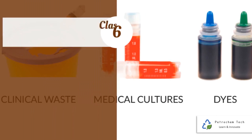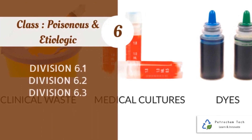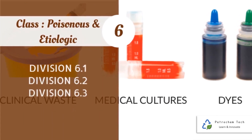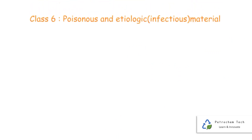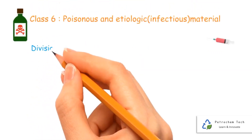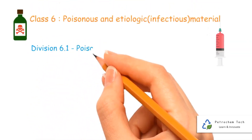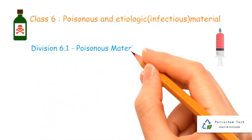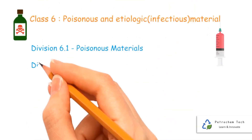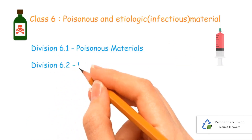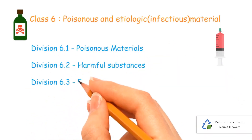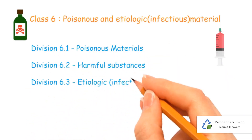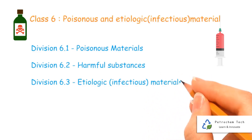Class 6 - Poisonous and Etiologic materials, consisting of three divisions. Poisonous material is a material other than a gas known to be so toxic to humans that it presents a health hazard during transportation.